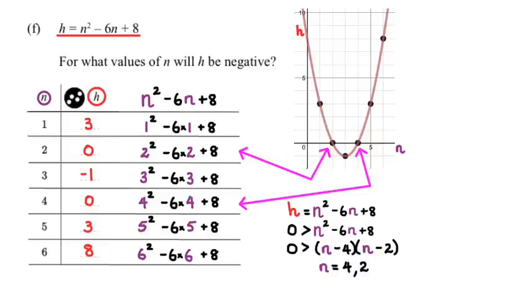But between 4 and 2, h is going to be negative. So h is negative between when n equals 2 and n equals 4.